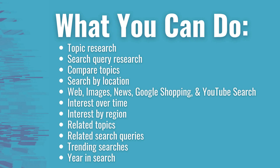Some of the things you can do with Google Trends include topic research, search query research, comparing multiple topics or multiple search queries — also referred to as search terms — search by location. You can look at web search, image search, news search, Google Shopping, and YouTube search.